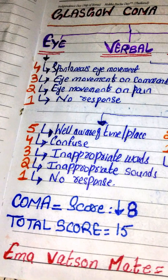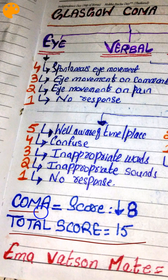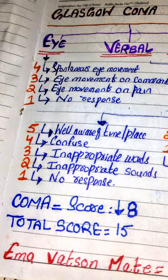The total score in the Glasgow Coma Scale is 15. Coma is labeled when the score is less than eight.